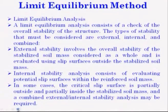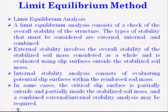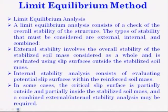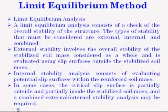These are all the basic properties: how pullout length works, what the failure structures are, and what the different types of reinforced earth walls are. Now we go for analysis. The first analysis is the limit equilibrium method. A limit equilibrium analysis consists of a check of the overall stability of the structure. The types of stability that must be considered are external, internal, or both.